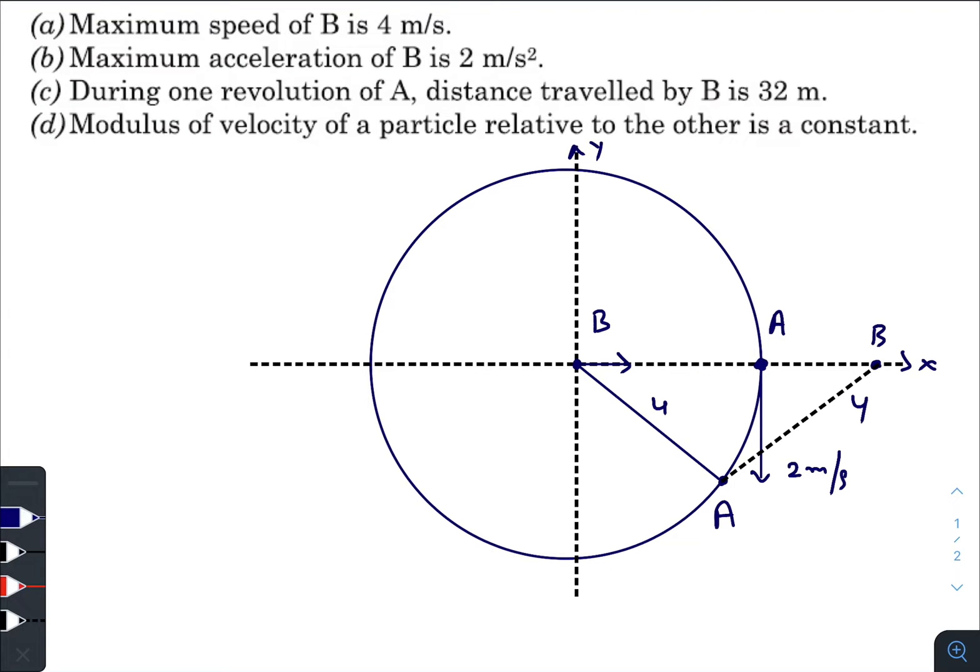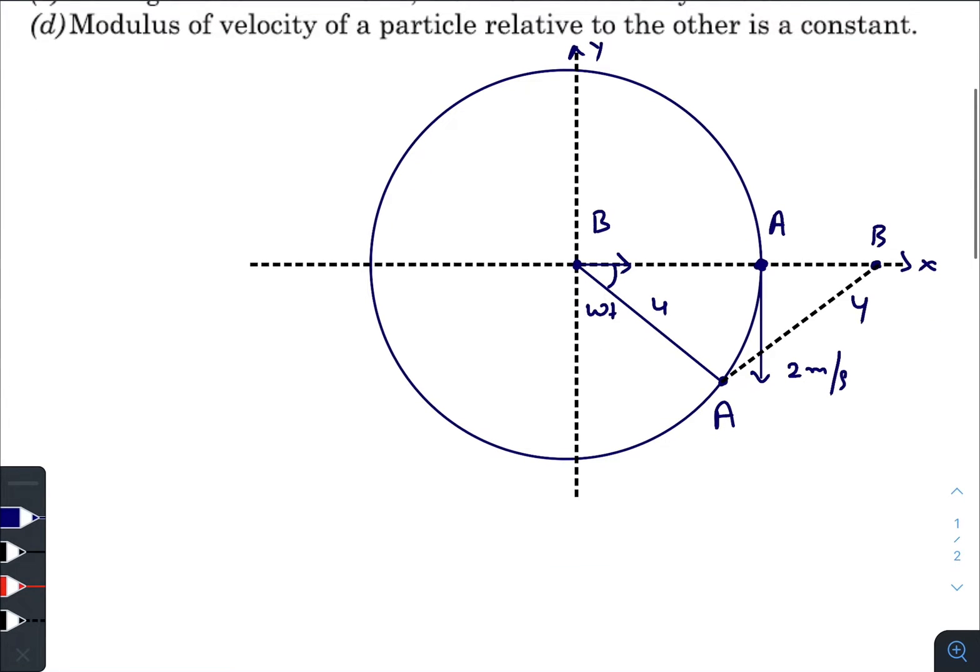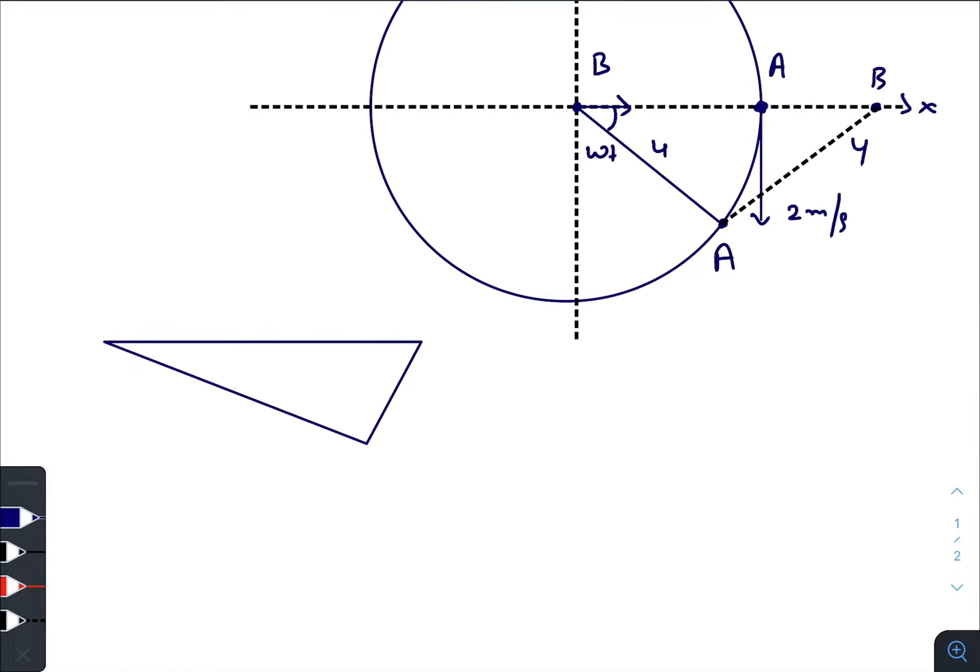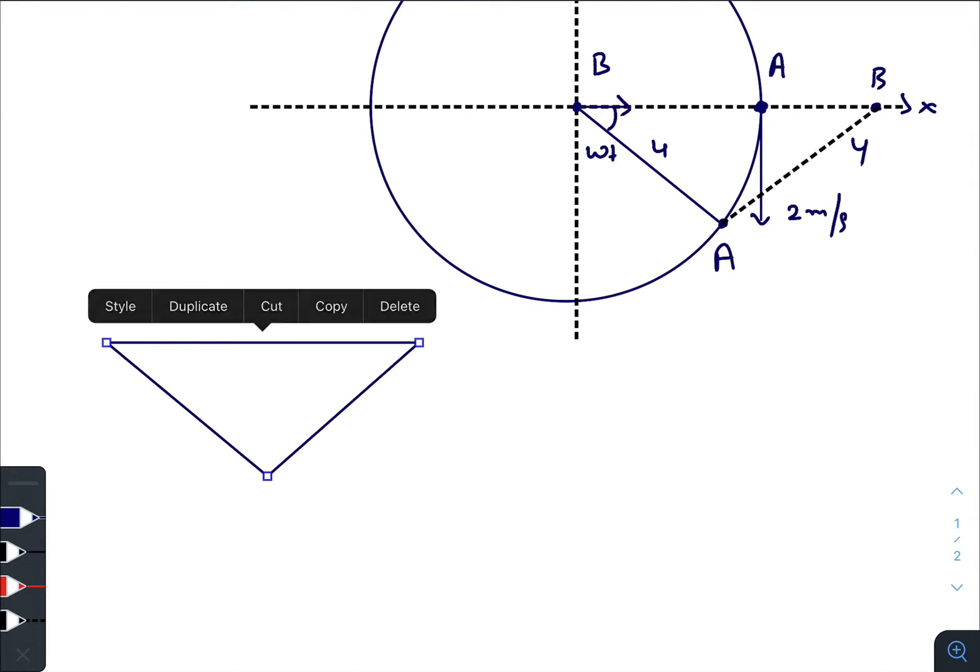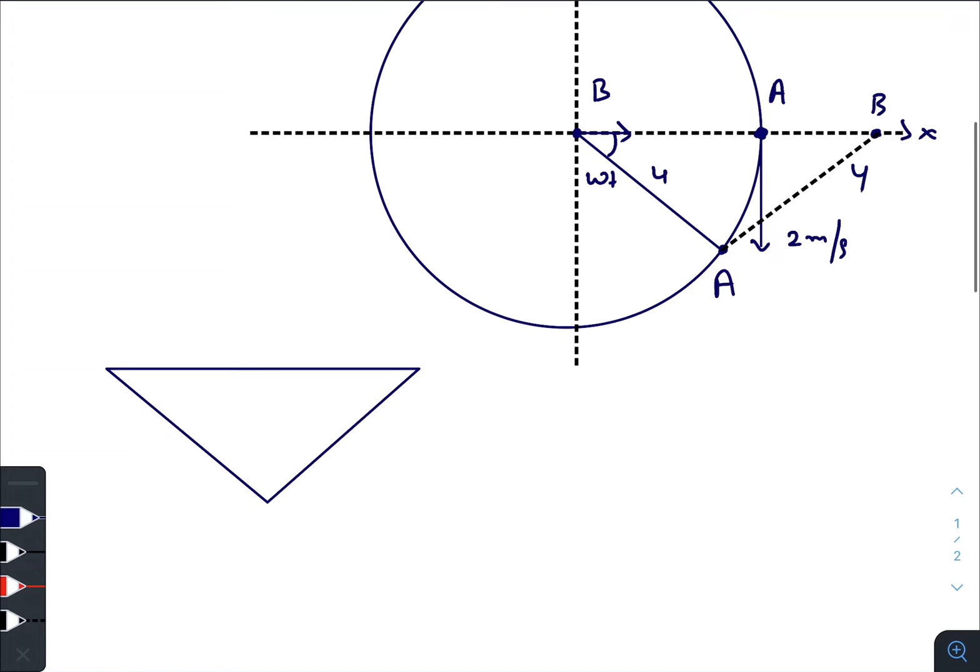In this time t, the radius vector of Particle A rotates by some angle ωt. Now if you draw this triangle, it looks something like this—it's an isosceles triangle. So this one is x, which is the displacement of Particle B. This one is 4, this one is 4. So this is ωt, this one is also ωt. So x equals 8 cos ωt, because 4 cos ωt plus 4 cos ωt.